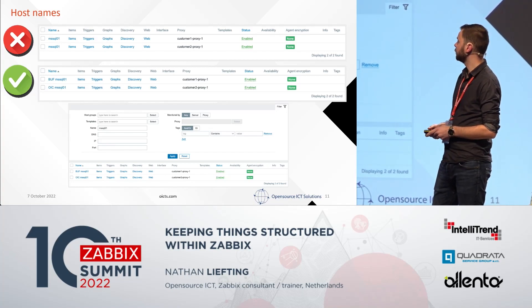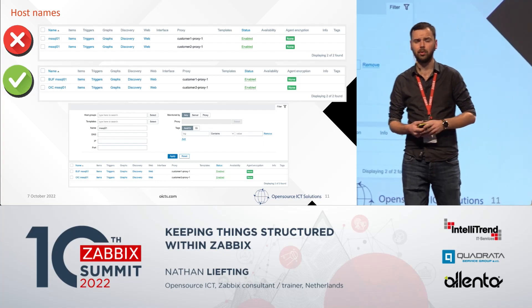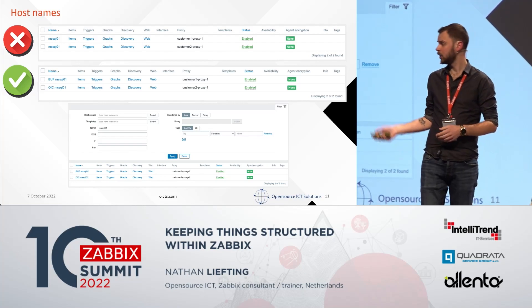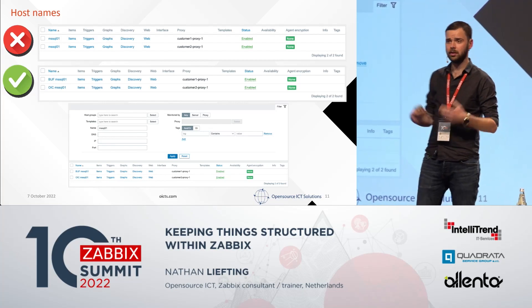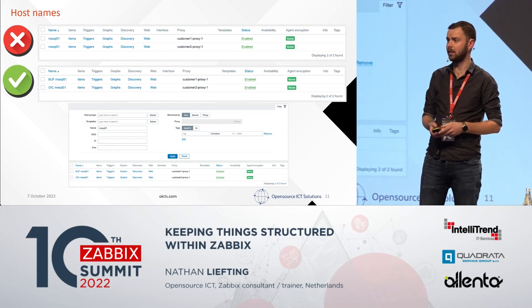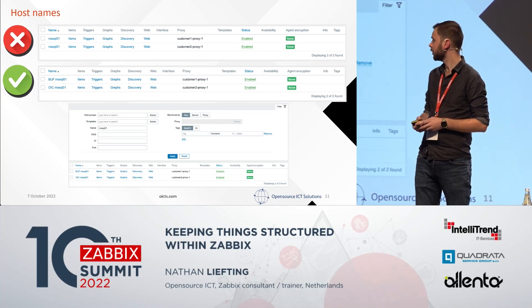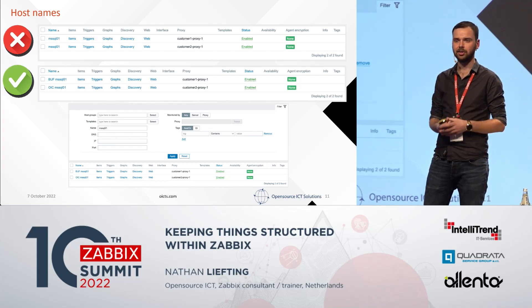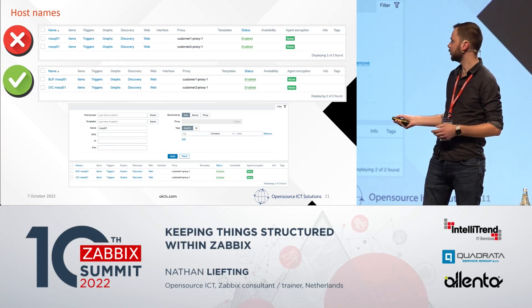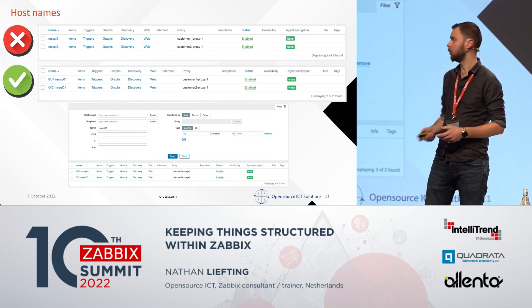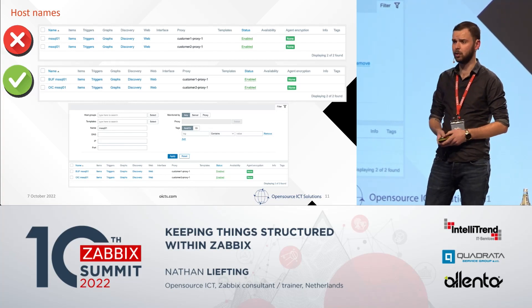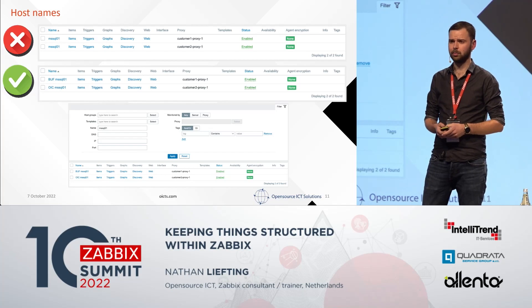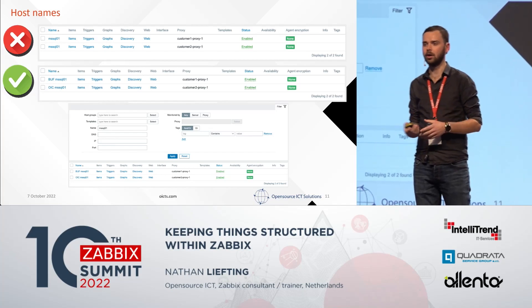What about an MSP environment where you might have duplicate host names? You can see we're using the host name — it's nice, short, and descriptive. But now we have customers with duplicate host names. We can still apply the same principle by simply adding a customer prefix. Then we can use wildcard searches, like in most filter locations in our Zabbix environment, to find all those hosts regardless of customer. Combine that with a host group and you are golden.